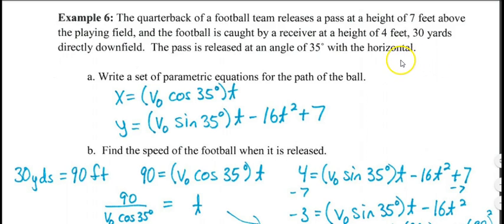Now, let's come to example six. We have the quarterback of a football team releasing a pass at a height of 7 feet above the playing field, and the football is caught by a receiver at a height of 4 feet 30 yards directly down the field. This pass is released at an angle of 30 degrees. They gave you 30 yards, you're going to have to convert that to feet. When we write these, they did not give me an initial velocity in this problem, but they did give me an angle. I have V naught cosine 35t and V naught sine 35t minus 16t squared plus 7 because the original height of the ball was 7 feet.